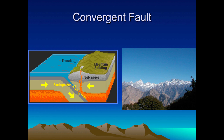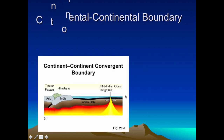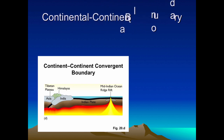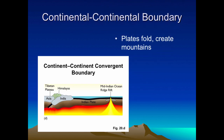Here is an example of convergent plates sliding toward each other — this picture shows oceanic crust on one side and continental crust on the other converging and creating volcanoes. But when two continental crusts collide, it makes mountains. The continental-continental boundary creates folds which form mountain ranges — the prime example being the Himalayas, formed between the Indian plate and the Asian plate.